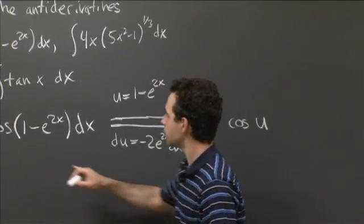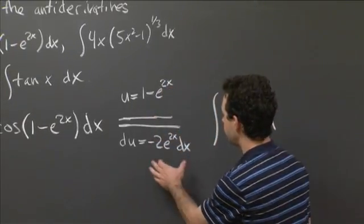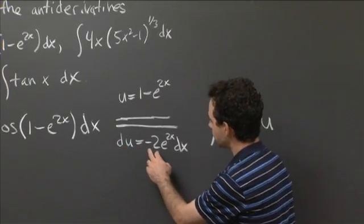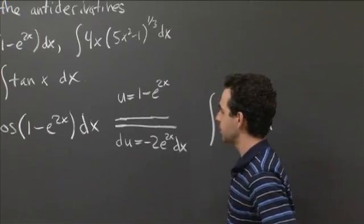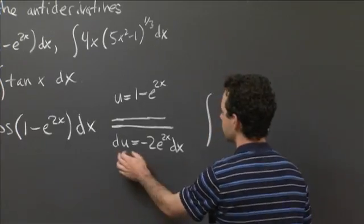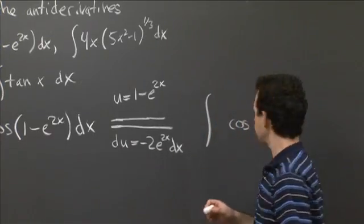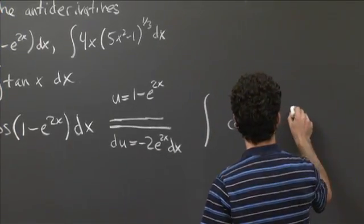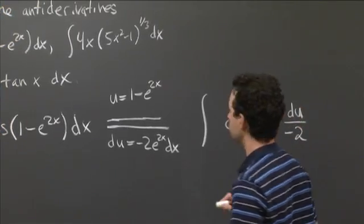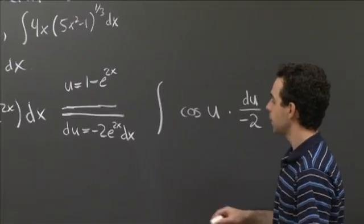Now, e to the 2x dx, that's very, very close to this du here. So what's different is that here I have a minus 2. So actually, e to the 2x dx is du divided by minus 2. So this is cosine u times du divided by minus 2.